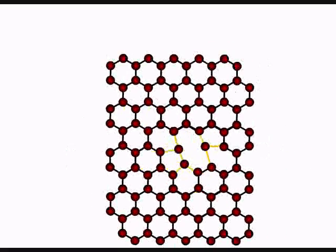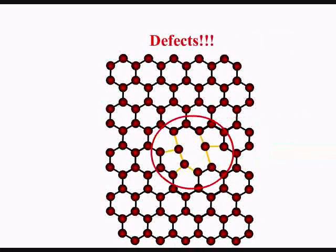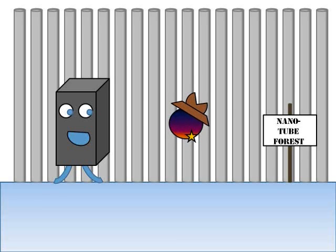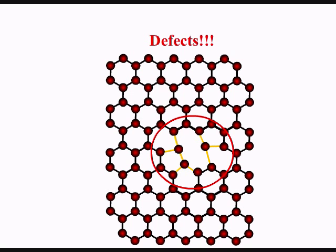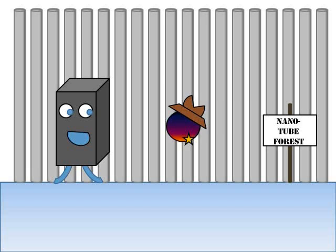Sometimes nanotubes have defects like pentagons and heptagons instead of hexagons, or carbon atoms that are just plain missing. These defects can also influence the conductivity of the tube. In general, missing carbon atoms will reduce the conductivity of the nanotubes. For armchair nanotubes, conductivity will monotonically decrease with increasing carbon atom vacancies. However, in some cases for zigzag tubes, a tube with many carbon atom vacancies will have higher conductance than the tube with fewer vacancies.